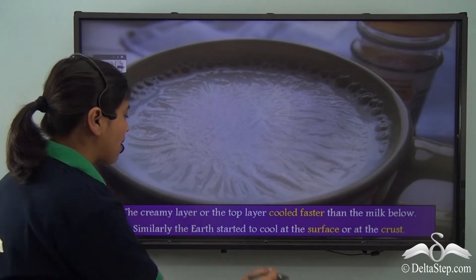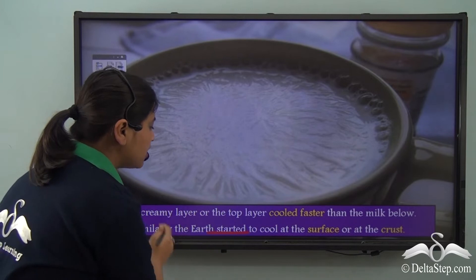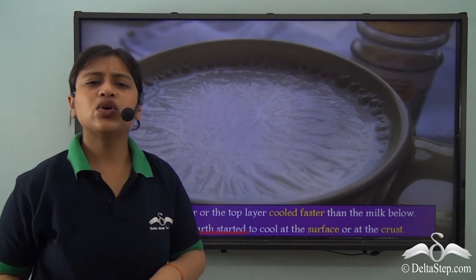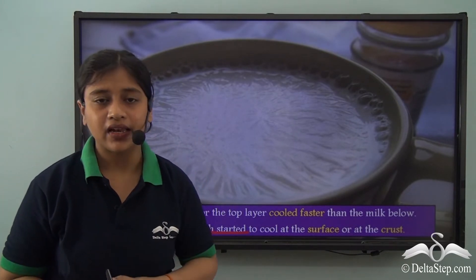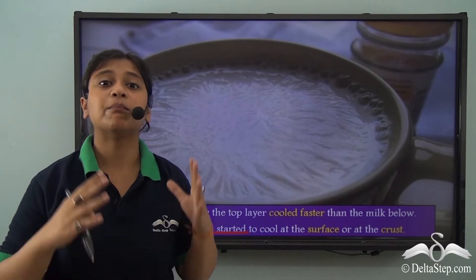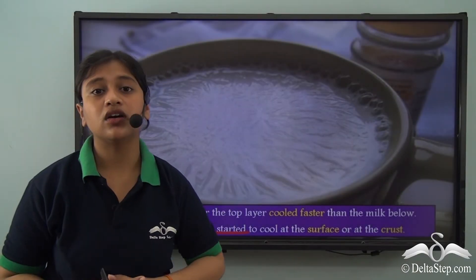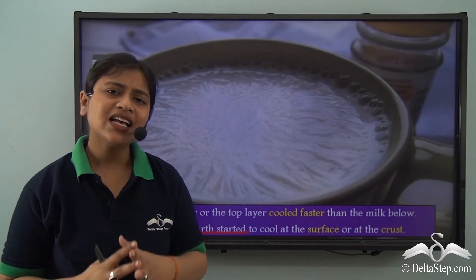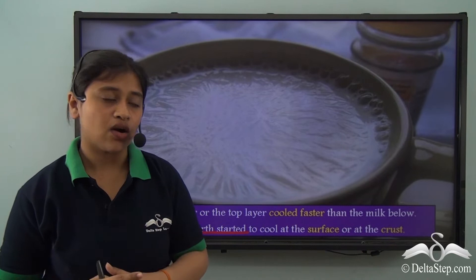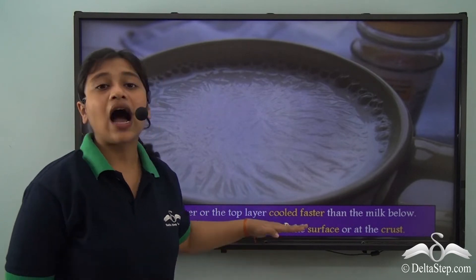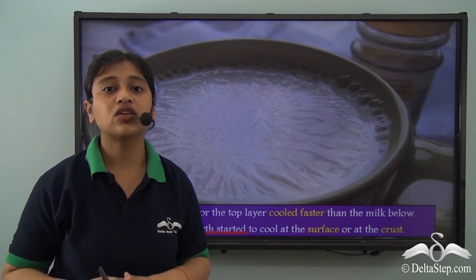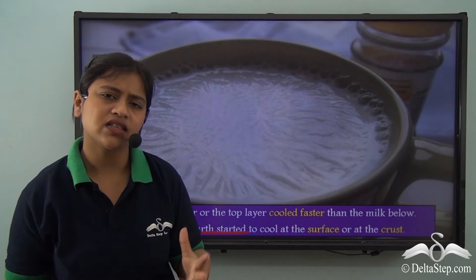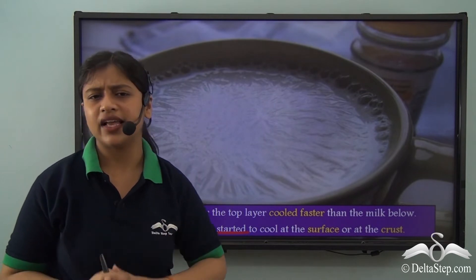A similar thing has happened to the earth. When the earth was very very hot at the beginning, it took millions of years for the earth to cool down. As it cooled down, the upper surface or the topmost layer of the earth cooled faster than the inner layers.